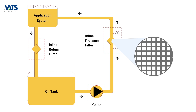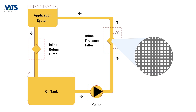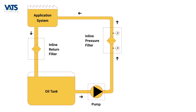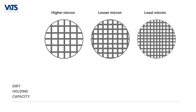Most inline pressure filters for hydraulic or lubricating systems are of this type, and the micron size is decided based on the tolerances of mainly the servo control valves and other critical components of the system. They work very well for the purpose of safeguarding the system, but going down in micron size reduces the dirt holding capacity, causing the filter to clog and need replacement more frequently — and this is expensive.